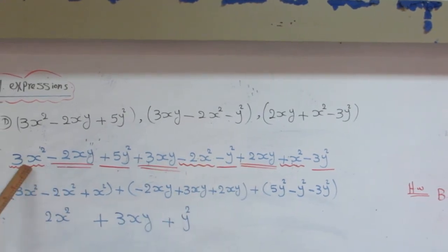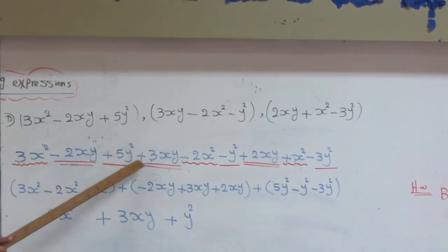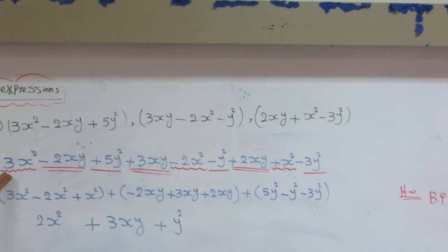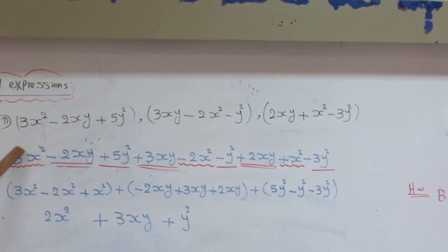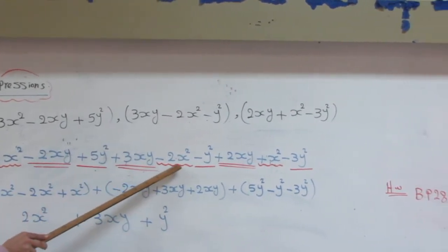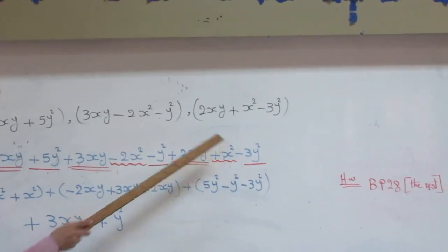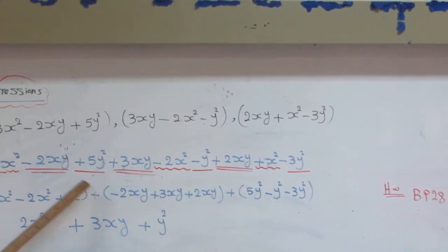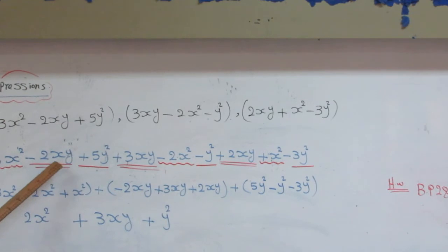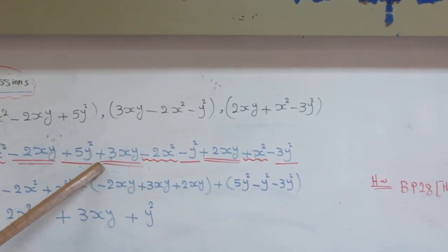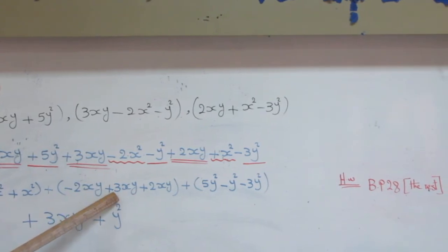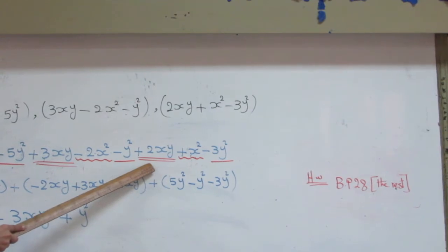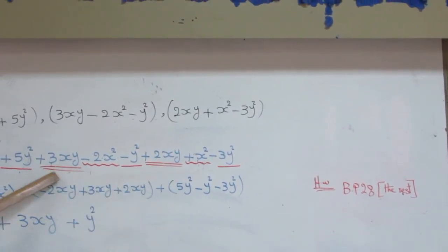Then the comma will be plus and the comma will be plus here. Then collect the like terms. 3X², I will take with it minus 2X² plus X². I will put them in the brackets. Make plus, open another bracket. I have here negative 2XY. Then negative 2XY will be beside it 3XY. And by the end, I have here 2XY. I have in here the same line.